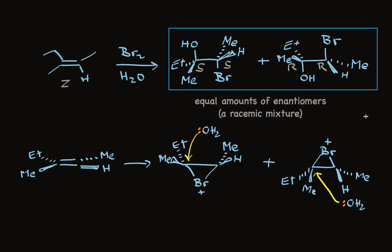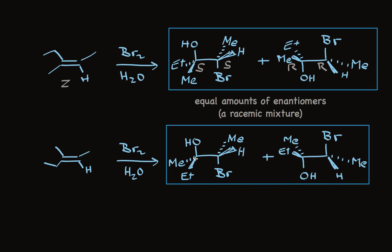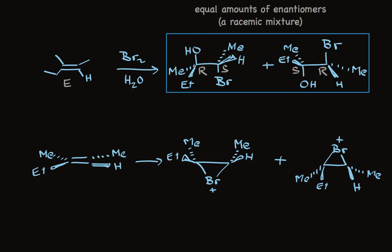Now take a look at the alkene that has E stereochemistry. The regioselectivity is the same, as we would expect, but the stereochemistry is different. This E stereochemistry leads to a different pair of enantiomers. Looking at the bromonium ion intermediate: bromine adds from the bottom to form one intermediate, or from the top to form the other. When water adds to each intermediate from the back side, it leads to the different stereochemical outcomes shown above.